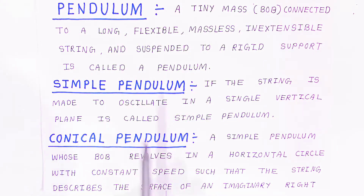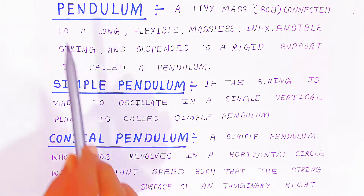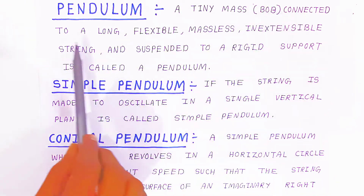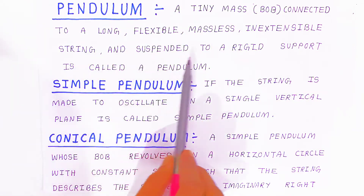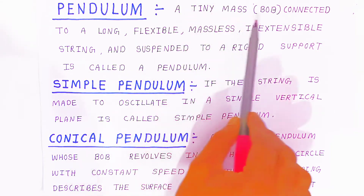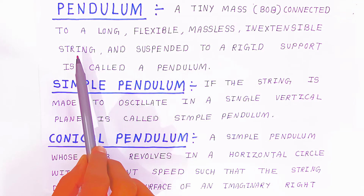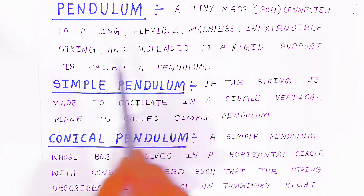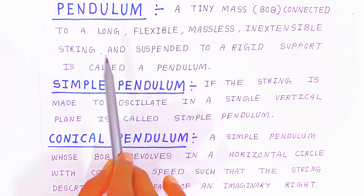Before going to the conical pendulum, let's define what a pendulum is. A tiny mass, also called a bob, connected to a long, flexible, massless, inextensible string and suspended to a rigid support is called a pendulum.